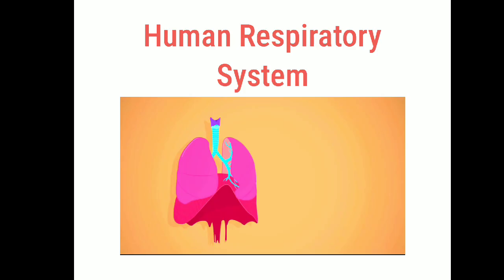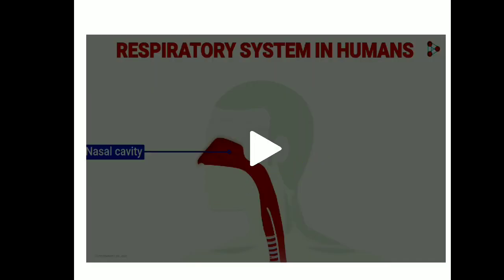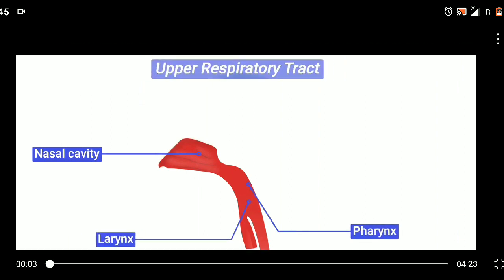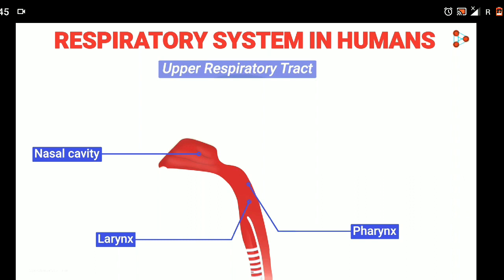Hello students, let us learn about the human respiratory system. The respiratory system ensures the intake of oxygen and removal of harmful gases like carbon dioxide. We can divide the human respiratory system into two parts: the upper respiratory tract and the lower respiratory tract.